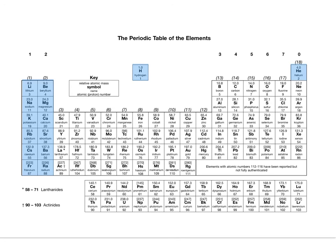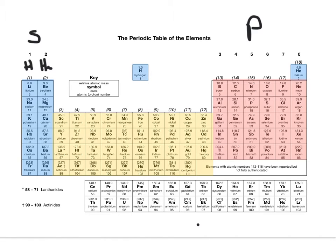The periodic table links into this model. With hydrogen and helium here, this whole section is the S subshell — the S block. This section over here is the P subshell, and in yellow it's the D subshell. So you've got the S block, P block and D block.